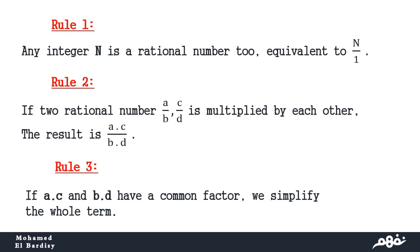Rule number 3: if the numerator a times c and the denominator b times d share a common factor, this term is then called a reducible term. We simplify the whole term until it reaches a stage where there is no other simplification, and then it's called an irreducible term.